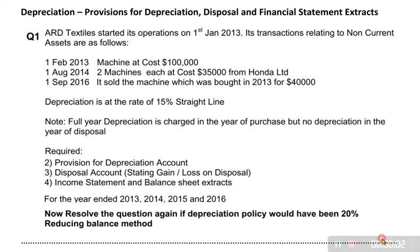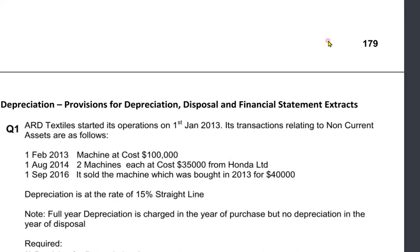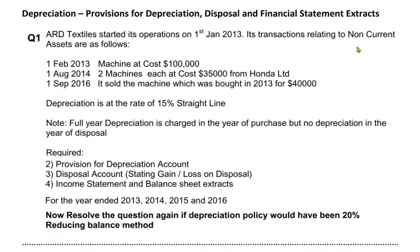The last part in depreciation that we need to cover is how to make financial statement extracts. Financial statements include an income statement or a statement of financial position. An extract means we do not need to make a complete income statement; instead we are just going to make that part of the income statement that contains entries relating to non-current assets and their depreciation.